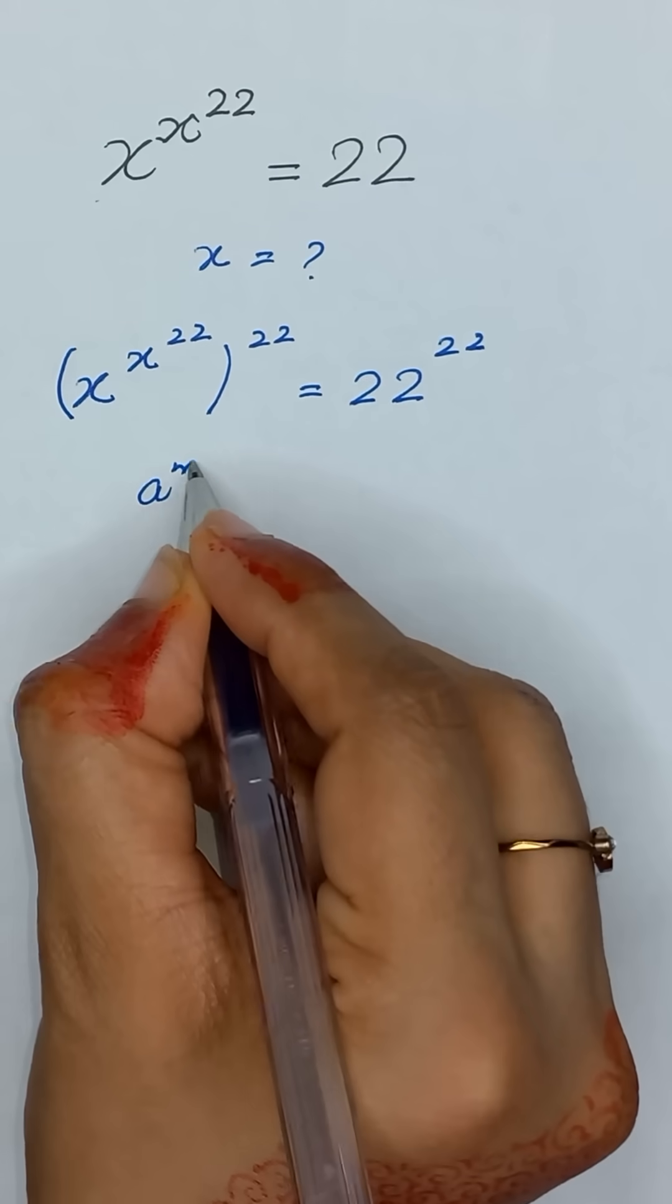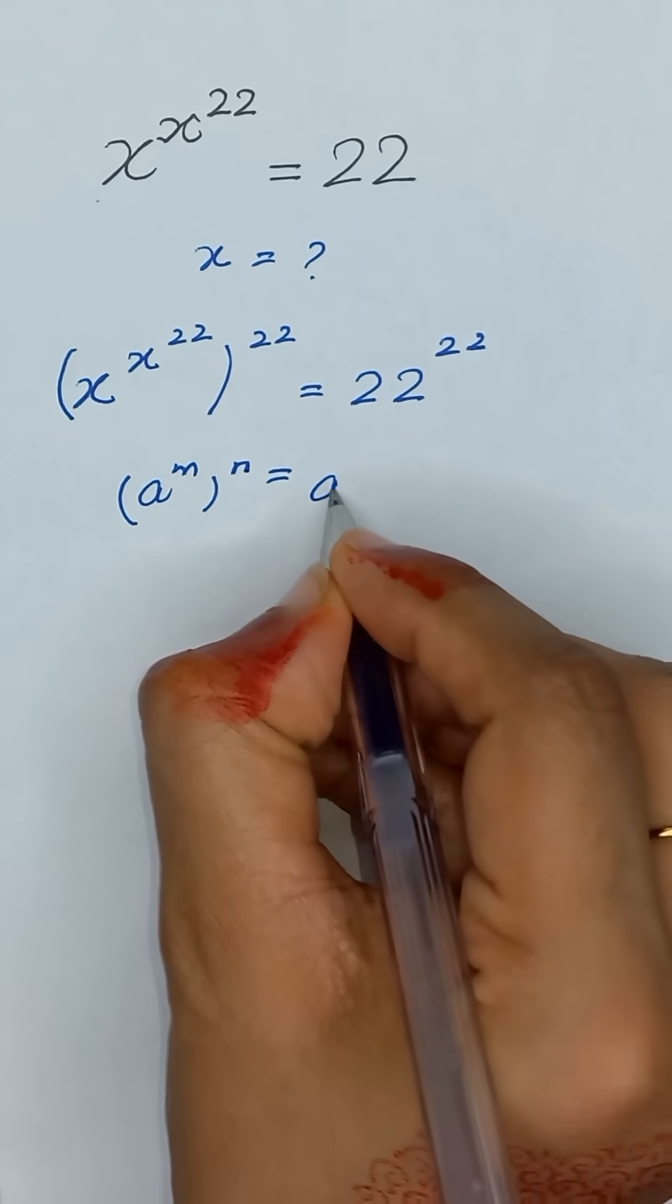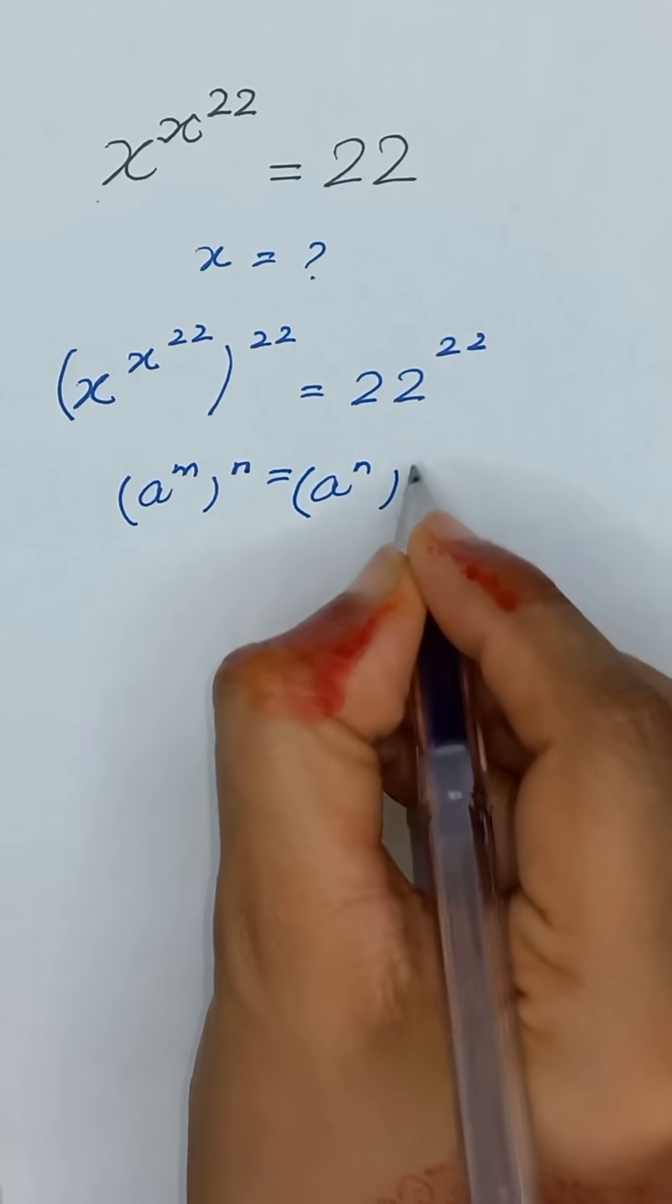As we know that a to the power m whole power n is equal to a to the power n whole power m.